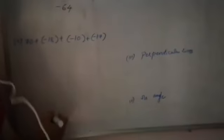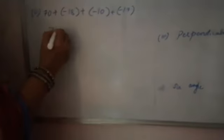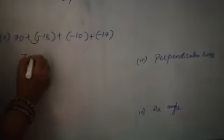Remember children, okay. Go through the video again. Now next two problems. First open the brackets. 70, plus into minus.